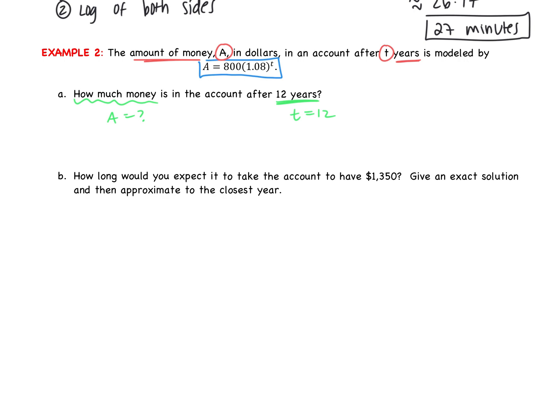So all we're doing then is using our equation and plugging in 12 for T. So we get 800 times 1.08 to the 12th power. That, you just need to type into your calculator exactly how it appears. So do that now, please. Type it in exactly how it appears. What do you think we should round to? How many decimal places? Two, right? Dollars and cents. So I got an amount of about $2,014.54. You all agree?